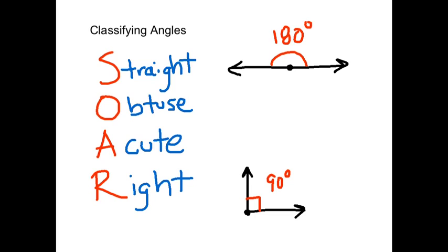These other two right here, obtuse and acute, you guys were actually already talking about it a lot in class the other day, where an acute angle is less than 90 degrees. So we could have an angle that's somewhere like this. Sorry. Where the measure of the angle is less than 90 degrees.